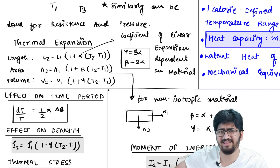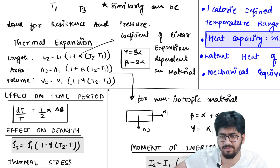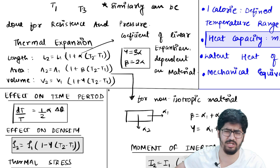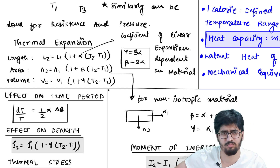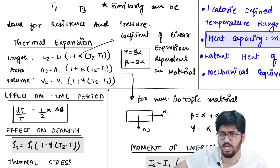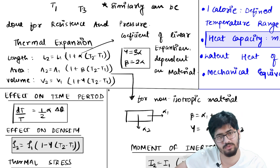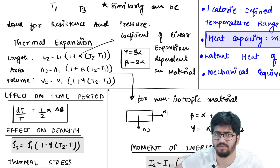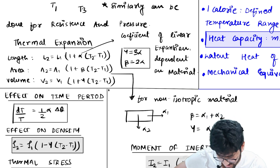The way to remember γ = 3α is: volume has dimension L³, so L appears 3 times, meaning γ = 3α. Similarly, area has dimension L², so L appears 2 times, giving β = 2α. This is just a memory trick to remember these relations.